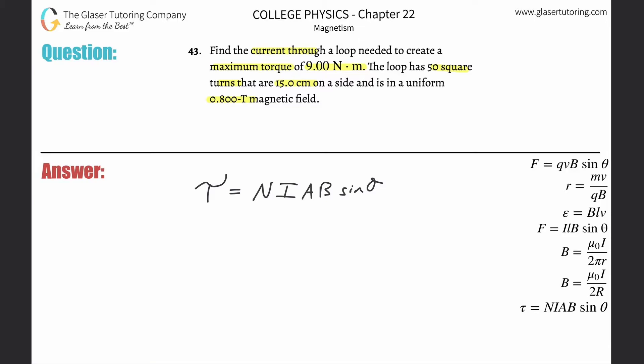Now to find the current, we need to divide everything that isn't current over to the left-hand side. So we bring N and all the other terms over.